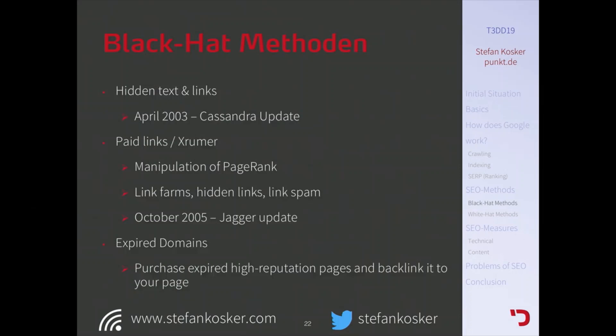Hidden text and links is a cat-and-mouse game — developers always find new ways to hide text and links, and Google finds new ways to deny them. For example, earlier people just used negative margins to push text off the page. Google responded by indexing only the viewport. Then developers used white text on a white page, and Google introduced accessibility checks for text size and color. Right now the best practice is position-absolute your text and use clip-rect with edge size zero — but how long that works, nobody knows.